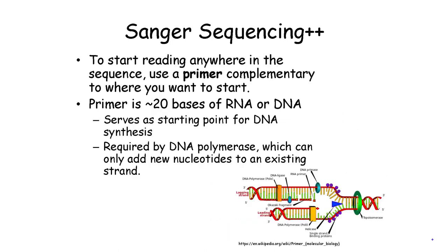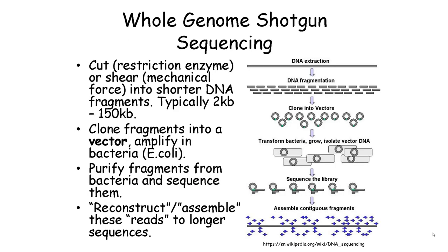Primers can be used to start synthesis from anywhere on the DNA rather than just from the end of the sequence. When you want to find out the sequence of a DNA molecule larger than 1000 nucleotides, you can design primers complementary to various locations on the DNA to initiate sequencing from that point. One of the main limitations of Sanger sequencing is that it can only be used for sequences up to 1000 nucleotides, because large DNA fragments cannot be accurately separated by their size. Using carefully designed primers, one can work around this size limitation somewhat, but that approach is not sufficient to handle an entire genome.